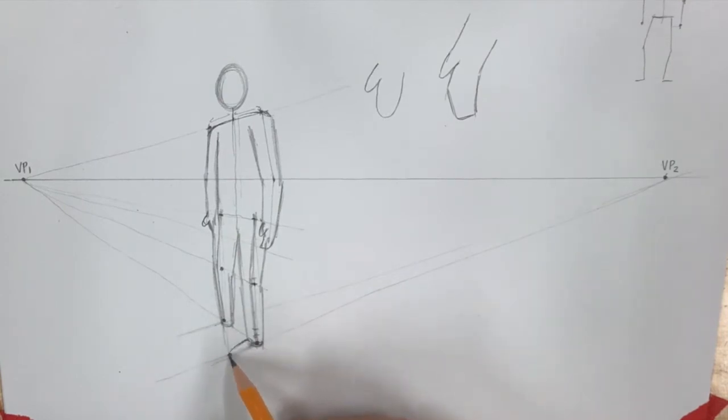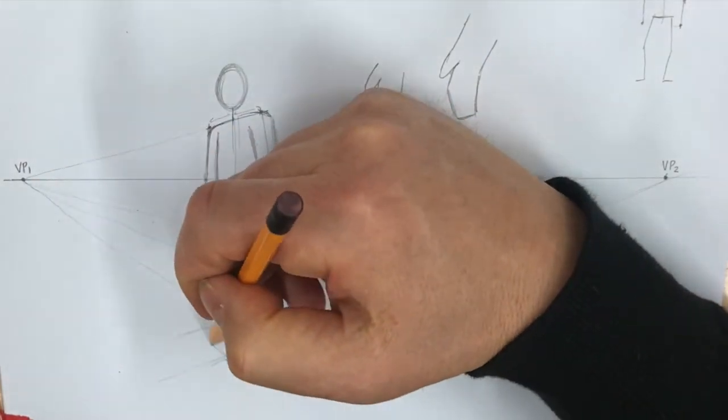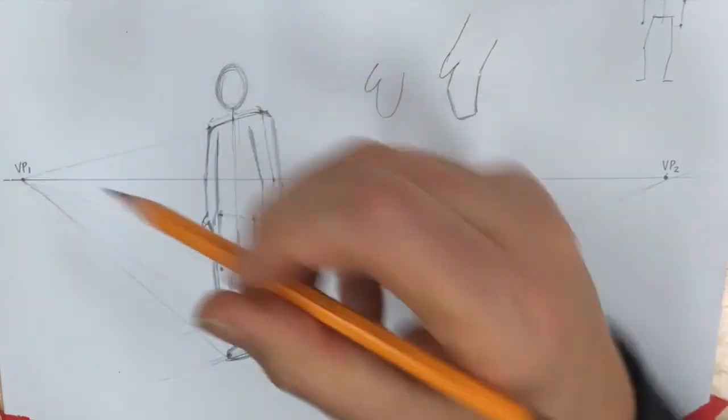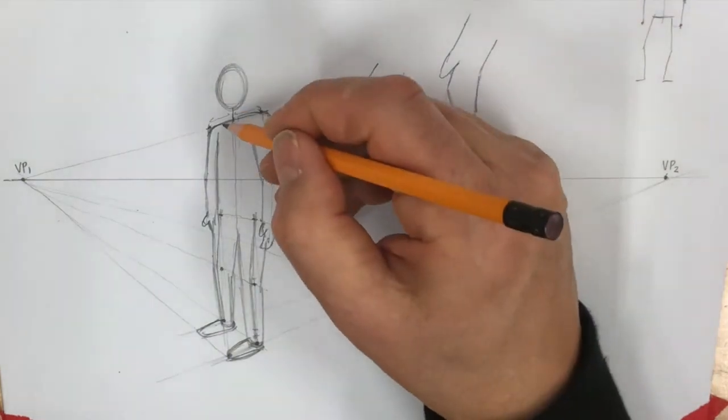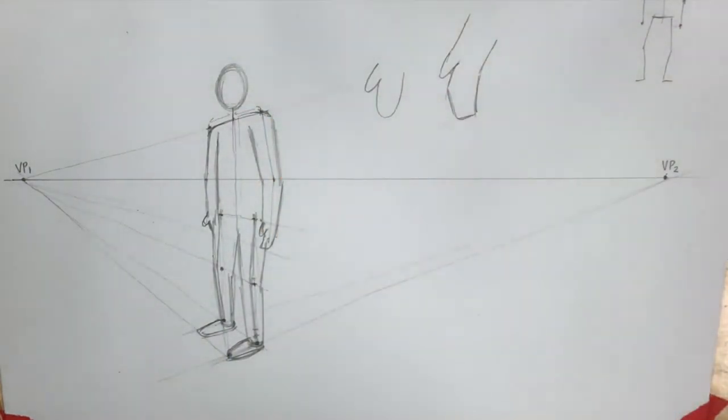And the same thing to that vanishing point, and the other foot is going to be at a slightly different angle. And then if I decide that that's the length of my foot right there, that means that the length of the other foot is going to be defined by a line going to the vanishing point like that.